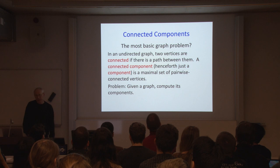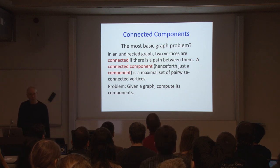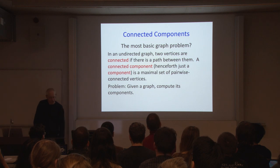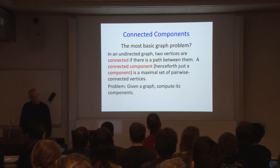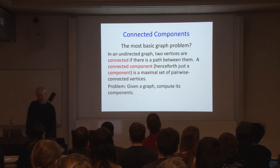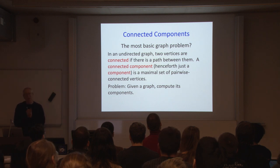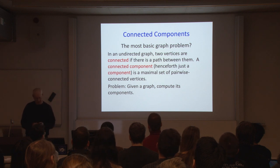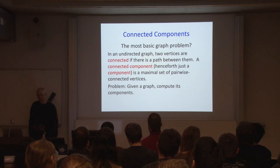The connected components problem is possibly the most basic graph problem. A graph is a collection of vertices and pairs of vertices called edges connecting them — we're dealing with undirected graphs. Two vertices are connected if there's a path between them. A connected component is a maximal set of vertices that are pairwise reachable. Our problem is to find the components of a given graph.